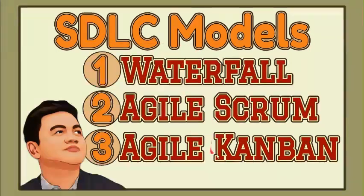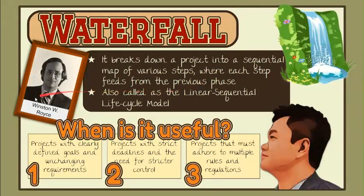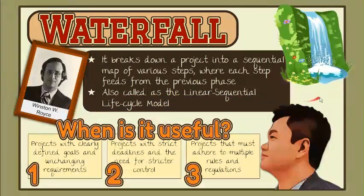The first in our list is called the Waterfall model. This method breaks down a project into a sequential map of various steps, where each step feeds from the previous phase. This method was originally defined by Winston W. Royce in 1970. It is also known as the Linear Sequential Lifecycle model. This model's process of downward mechanism is similar to that of a waterfall.